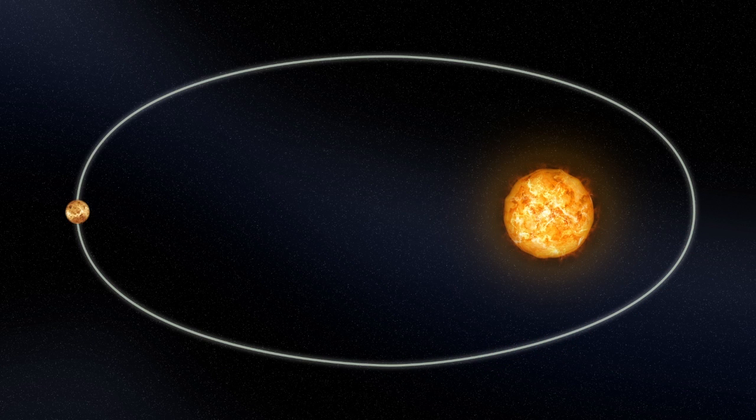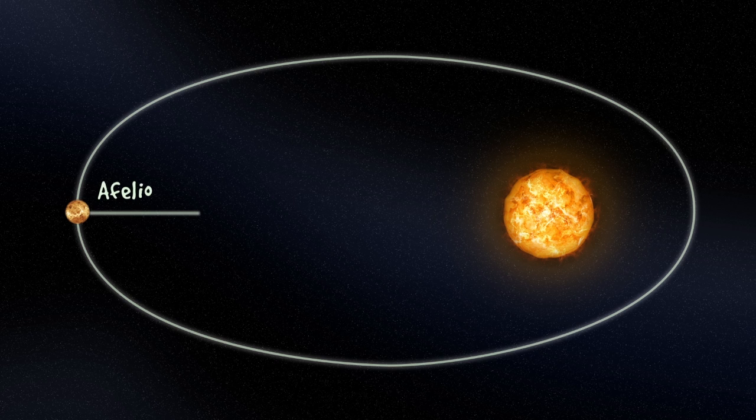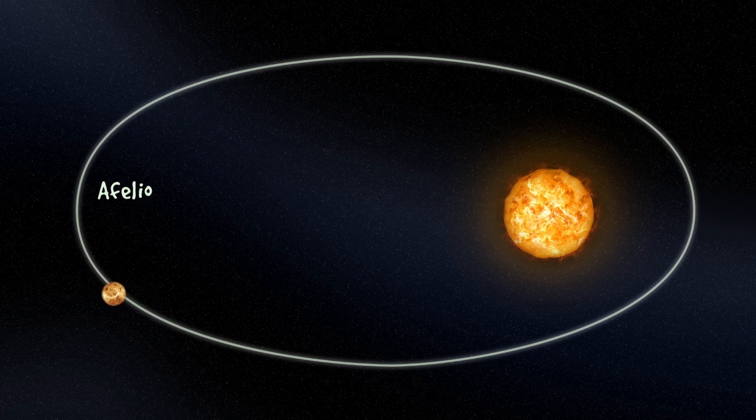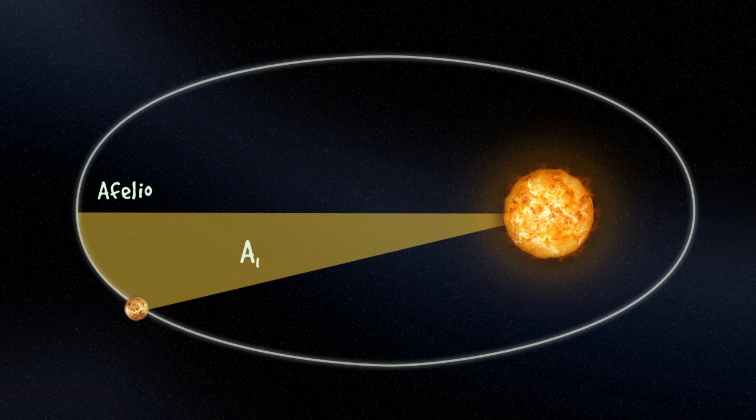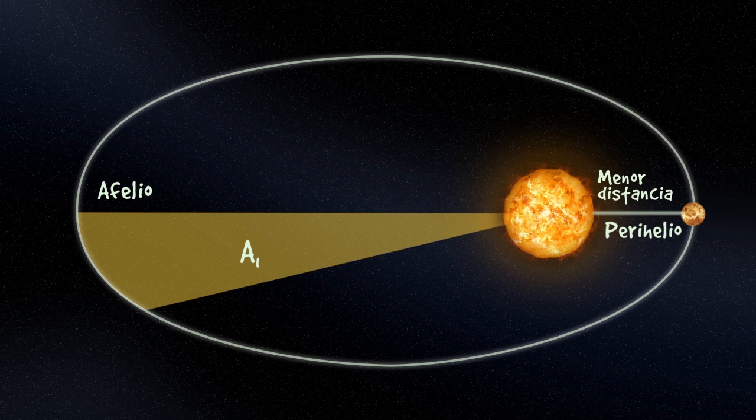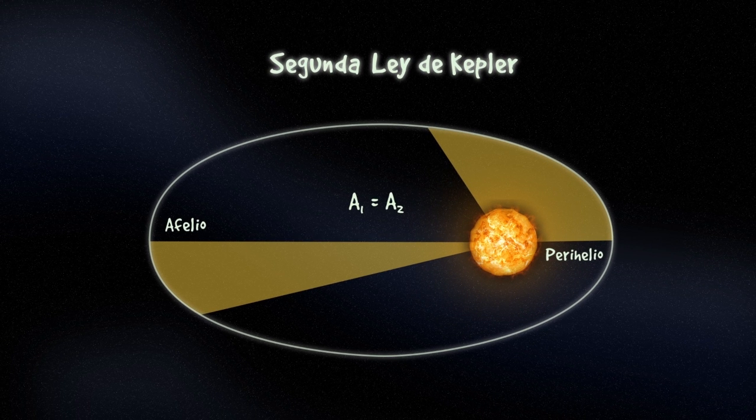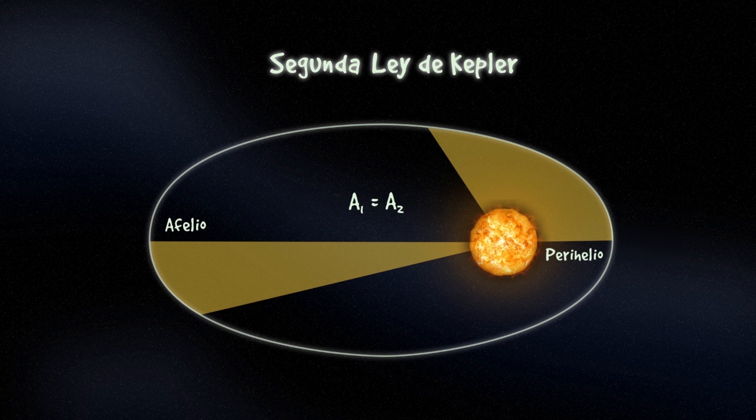...inicia su recorrido estando en el afelio, que es el punto de mayor distancia al que se encuentra un planeta sobre su órbita elíptica, con respecto al sol. Al cabo de tres meses, ha barrido un área determinada. Cuando hace su desplazamiento por otros tres meses en el perihelio, el punto de menor distancia al sol, el área que barrió es exactamente la misma que se describió con anterioridad. Lo que podemos concluir a partir de la segunda ley de Kepler es que los planetas viajan a mayor velocidad cuando están en el perihelio, porque tienen que desplazarse una mayor longitud para barrer la misma área. En cambio, en el afelio, el movimiento del planeta es con menor velocidad.